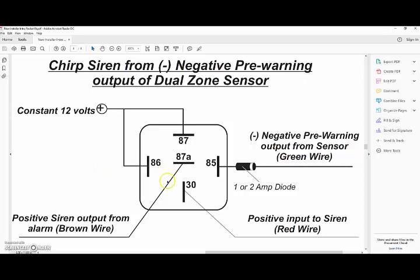86 and 87 is just connected to a constant steady 12 volts fused of course and use the 30 output and you can tie that into your siren, this is going to be the alarm siren output.